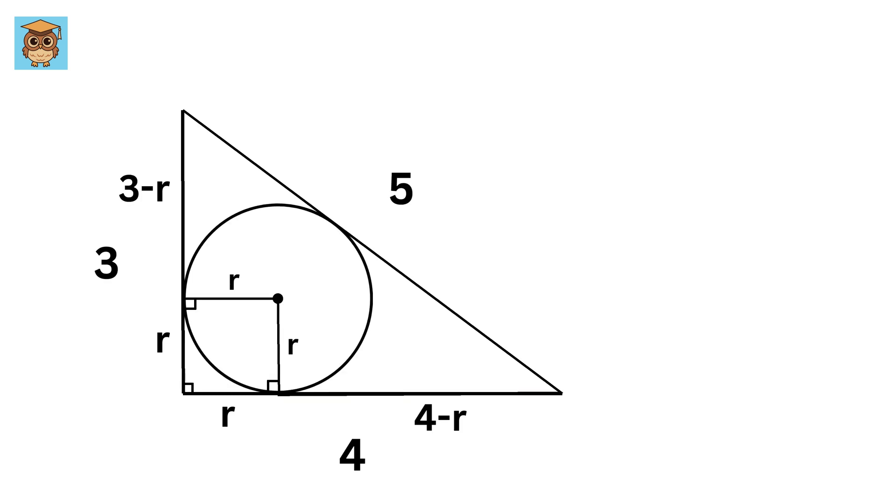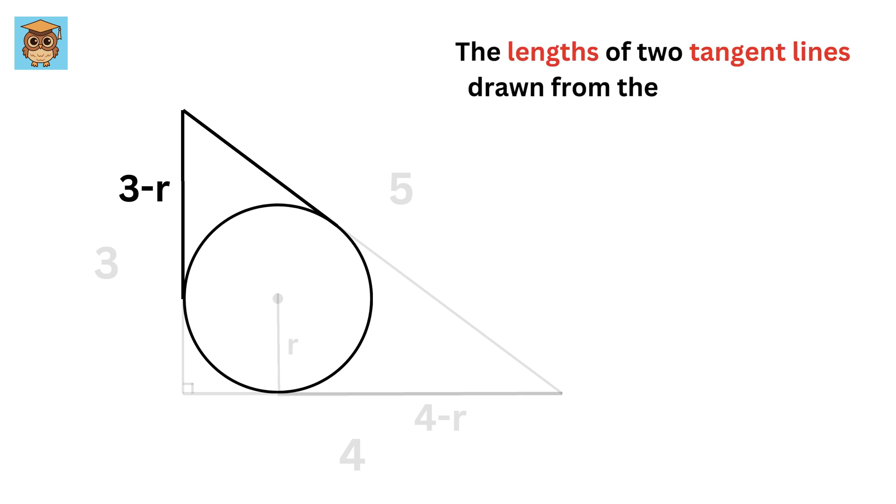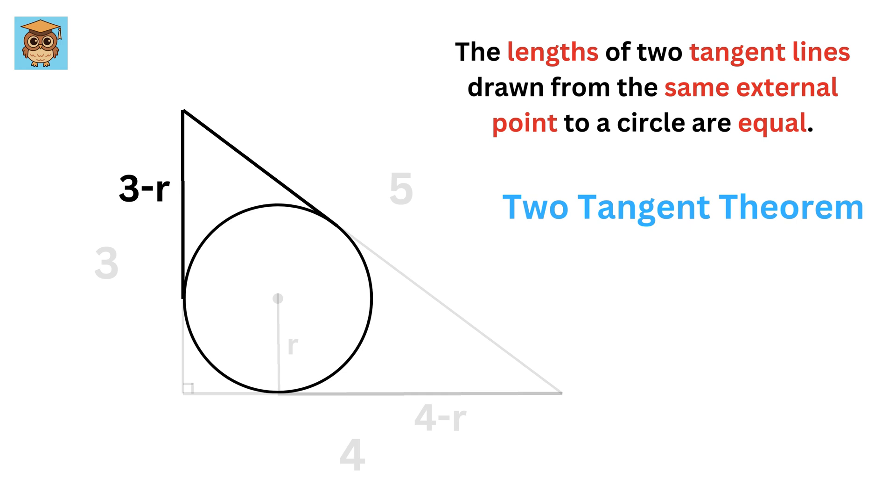Now let's clear out everything and just keep this circle and these two lines which are tangent to this circle. Here comes the magic. The lengths of two tangent lines drawn from the same external point to a circle are equal. Specifically, it's called the two-tangent theorem.